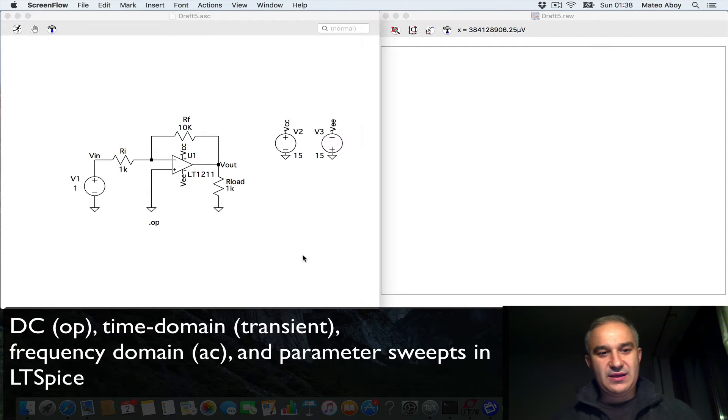For instance, in this circuit that we have been working with, which is an inverted amplifier with a gain of minus 10, let's start by conducting an operating point analysis, so a SPICE directive OP.